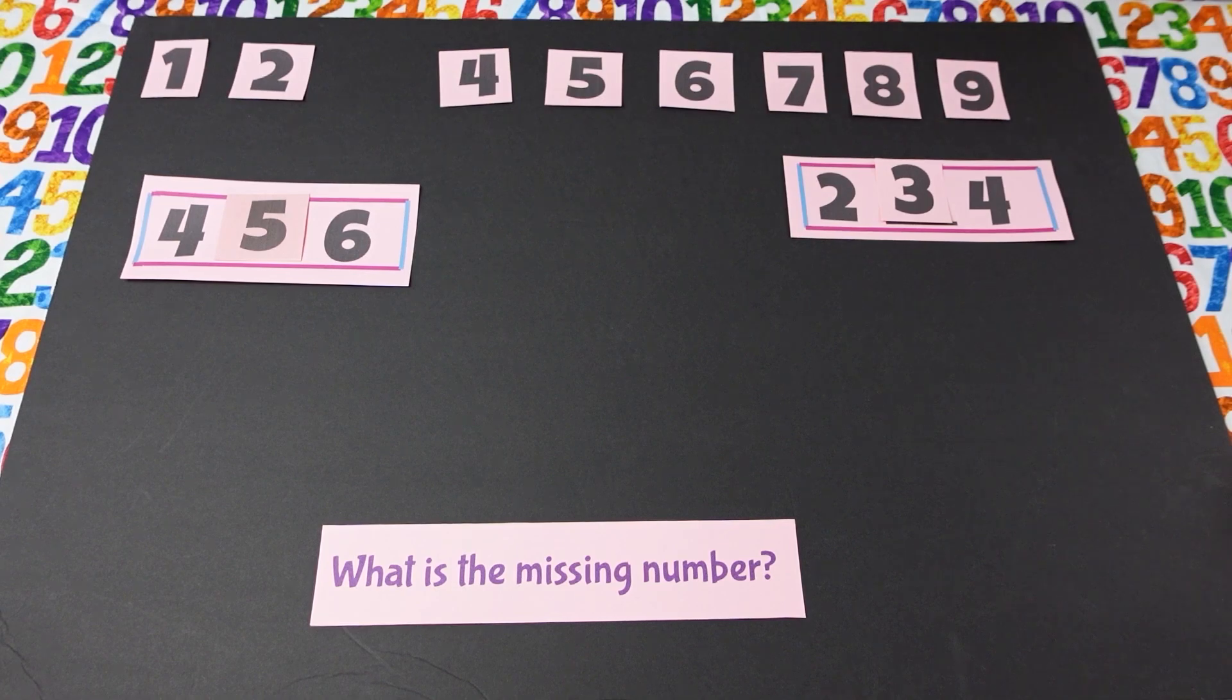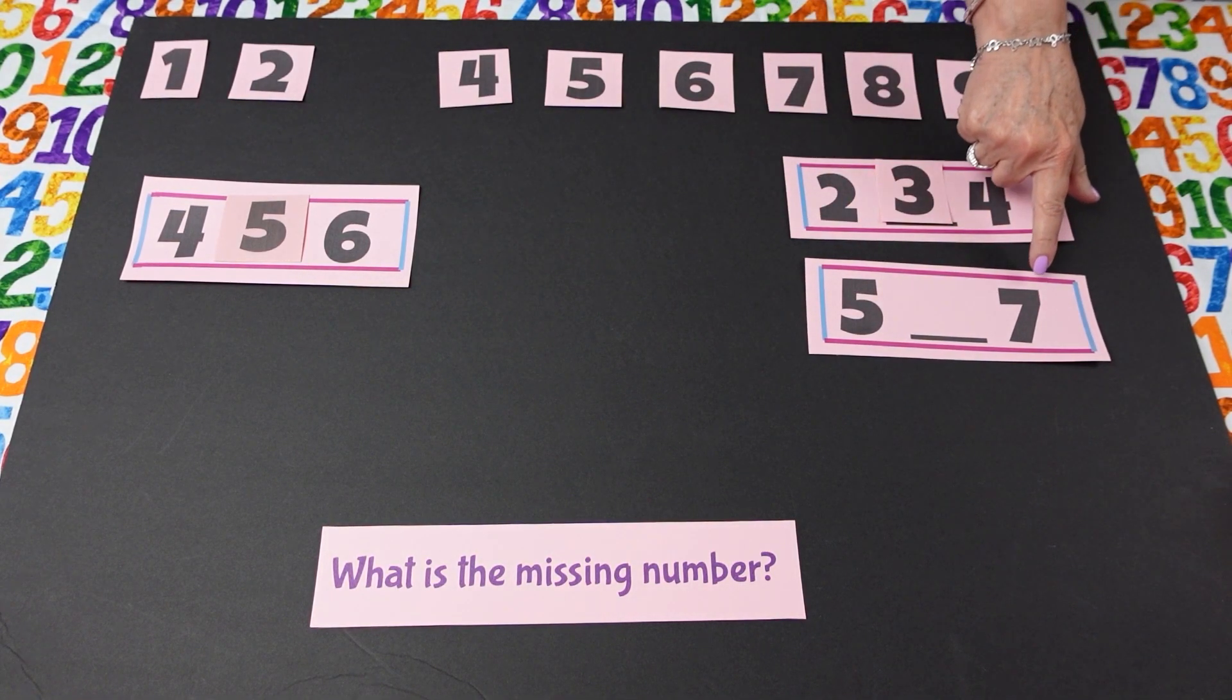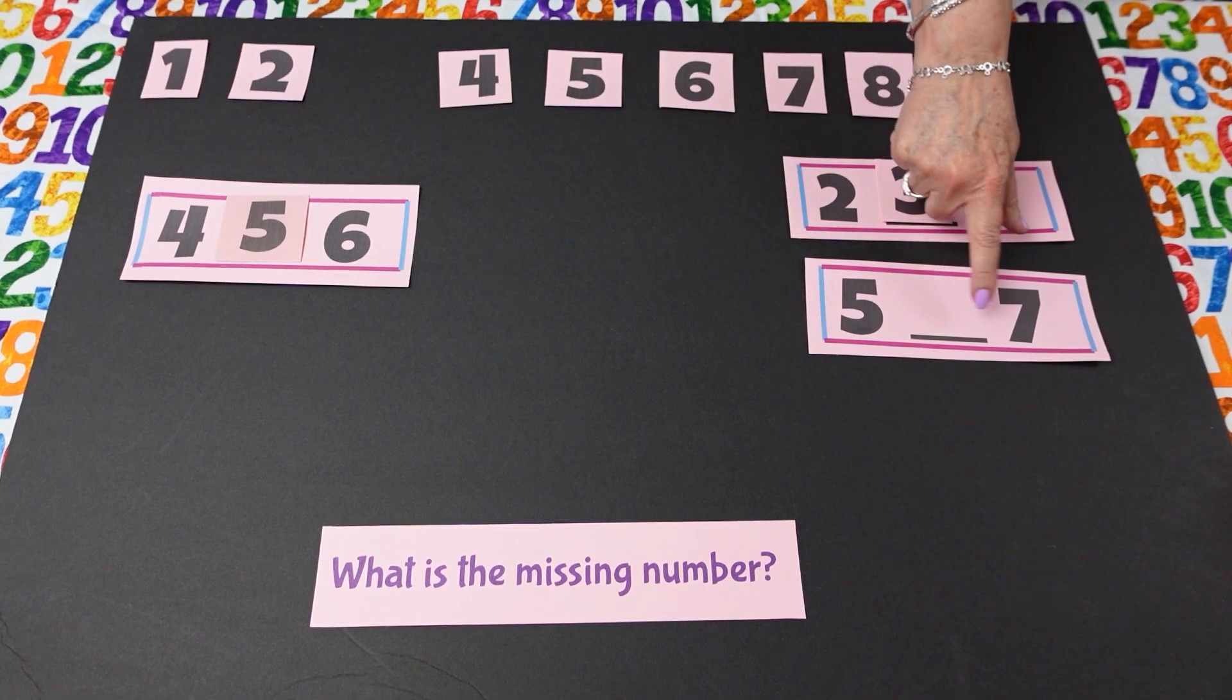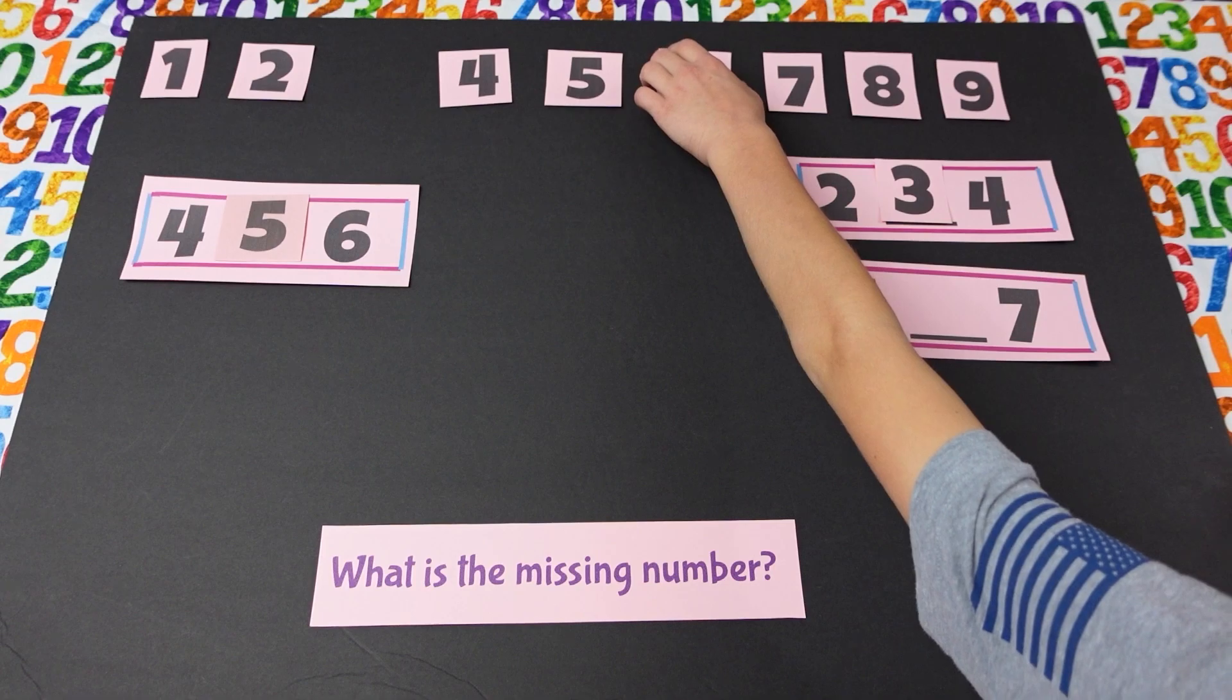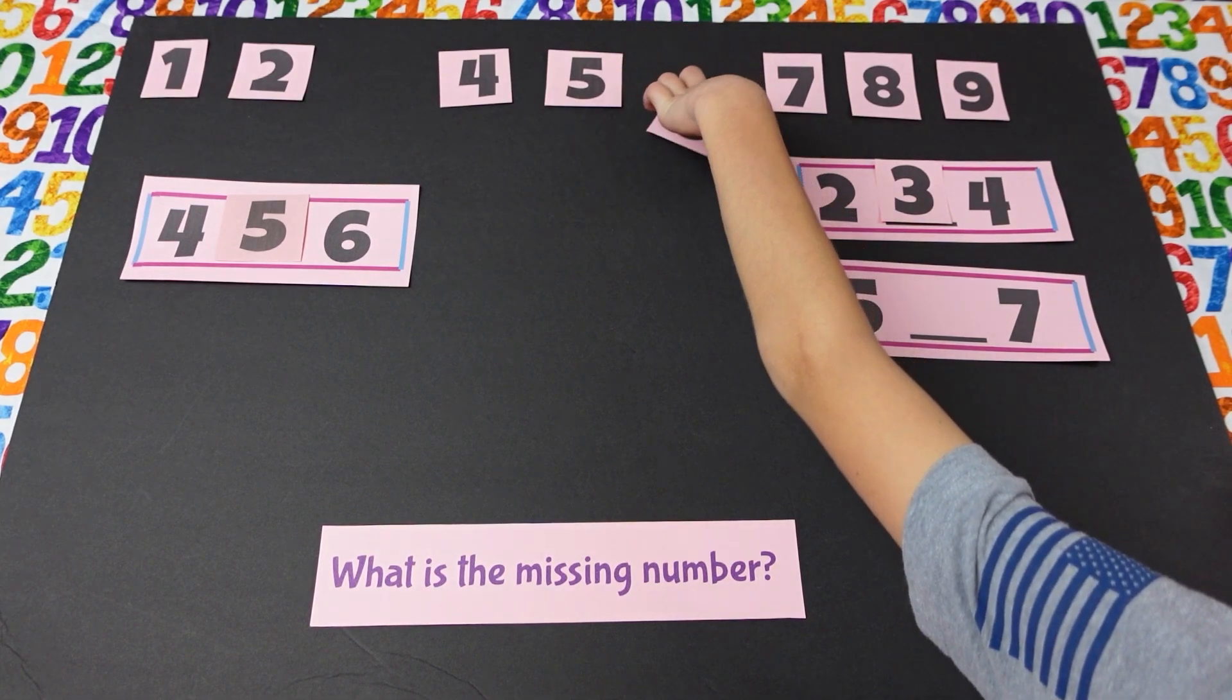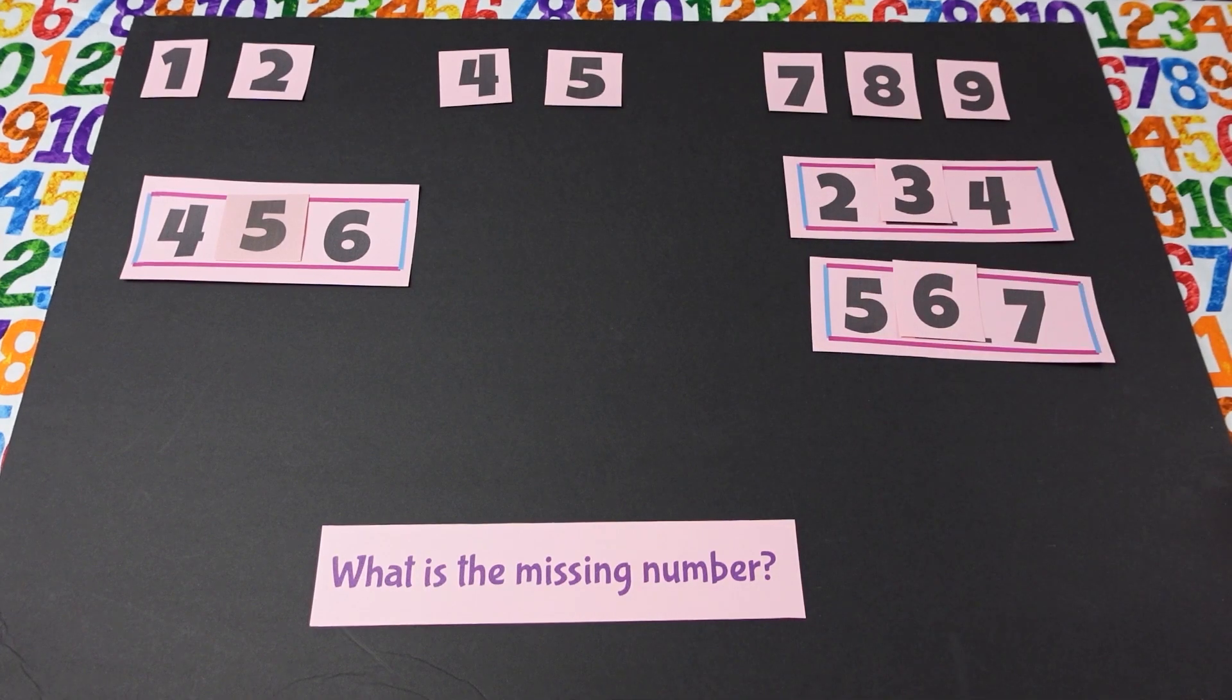Jonathan, are you ready again? Yes. Okay. What number is that? Five. And what number is this? Seven. What's missing in the middle? Six. Okay. Can you find six for me and put it there? Yes, I can. Good job. Perfect.